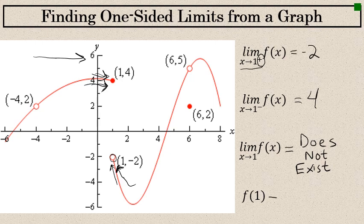The actual value of f of 1 — as you can see, there is a filled-in dot at the point 1 comma 4, so f of 1 equals 4.